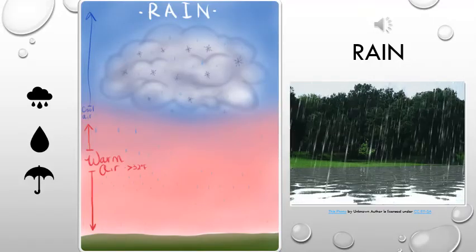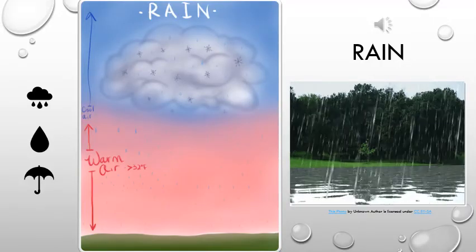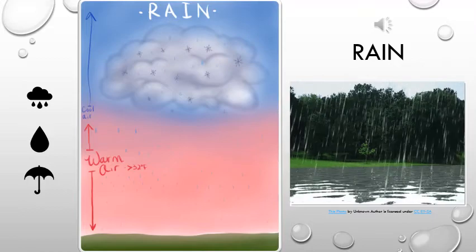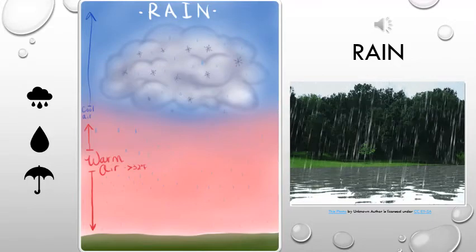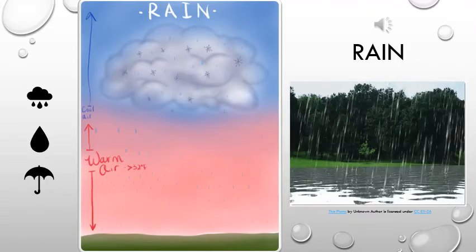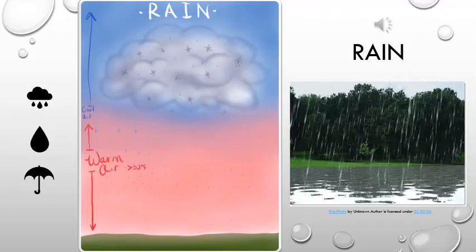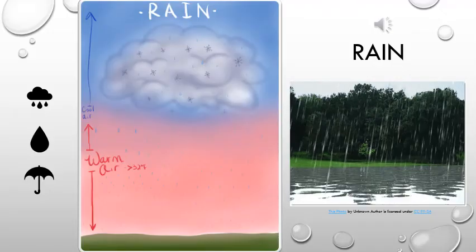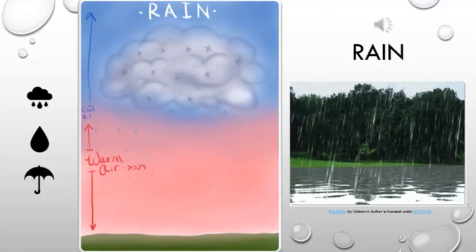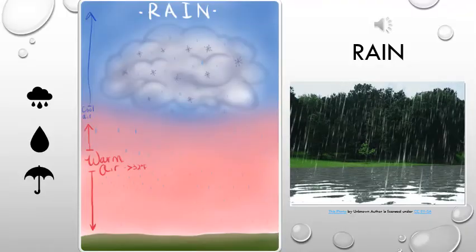The second form of precipitation that we'll be discussing is rain. Much like snow, rain begins with water droplets and tiny ice crystals in a cloud. These tiny water droplets and crystals collide or bump into each other until they become too heavy to stay in the air and they fall down to earth.